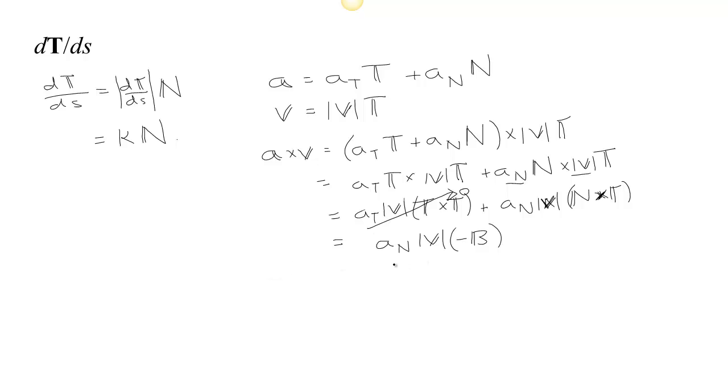So if we recall now that a sub n was actually equal to the curvature times the speed squared, we have here that a cross v is equal to kappa speed squared times the speed would make kappa v cubed, so times negative B.